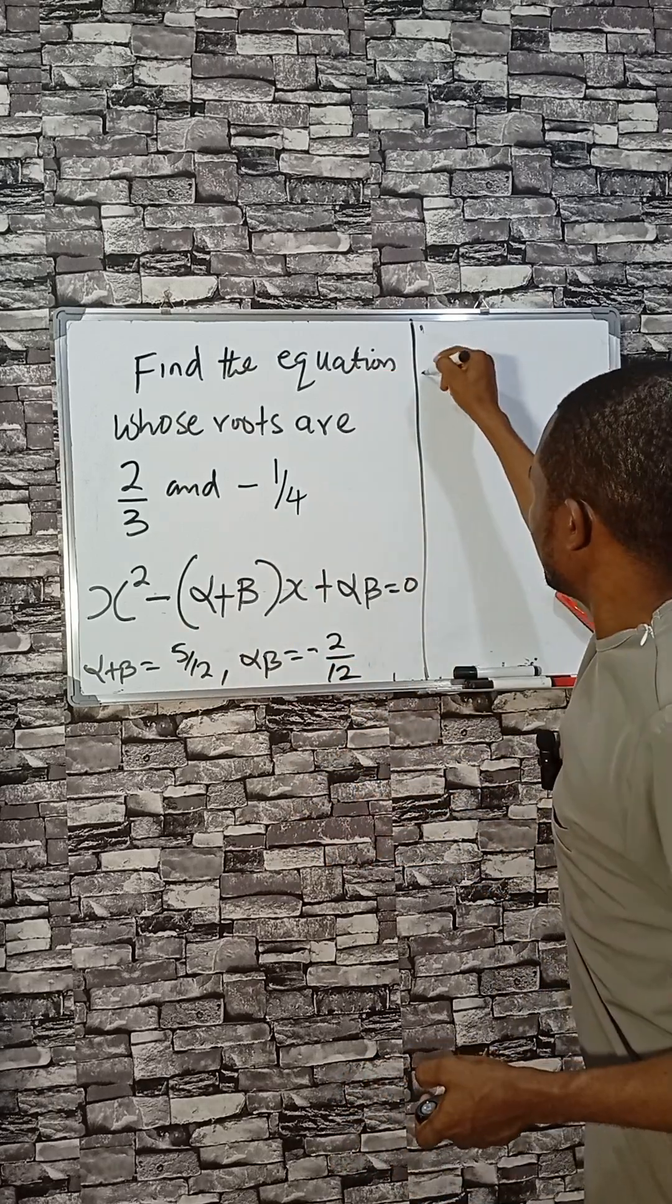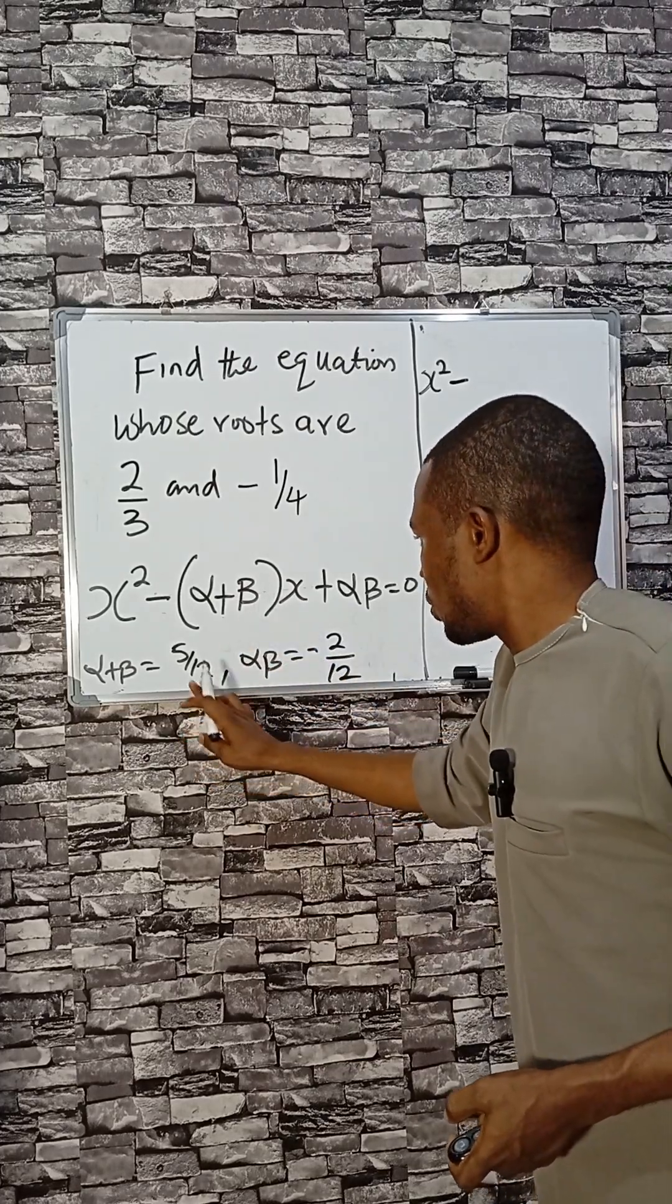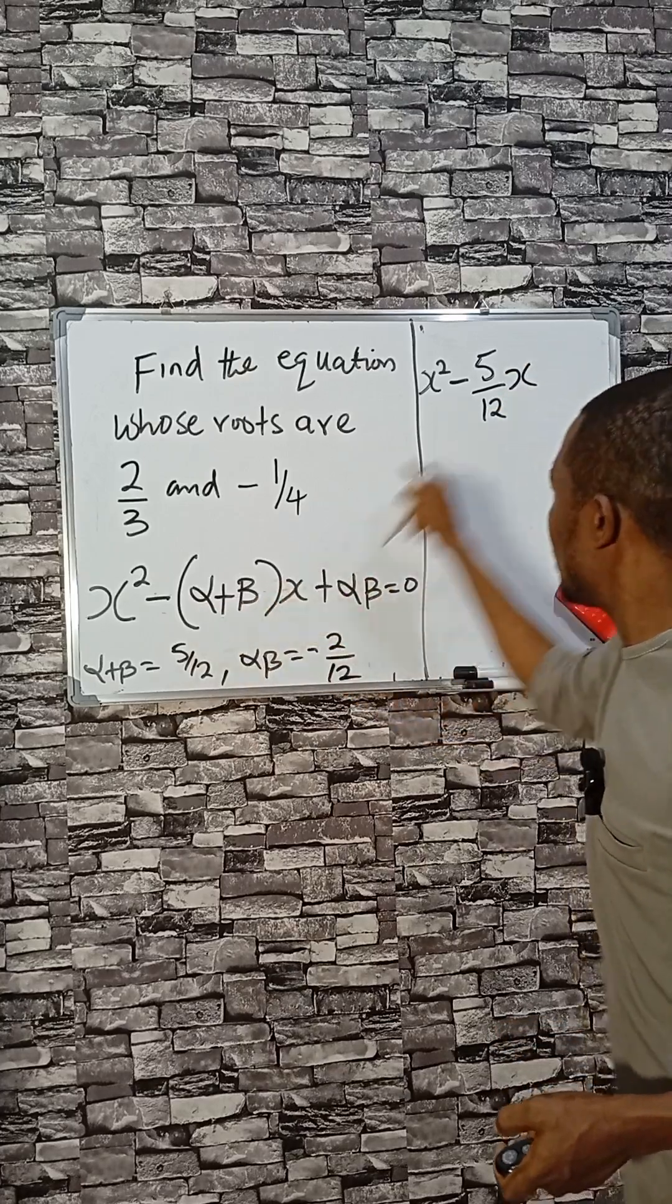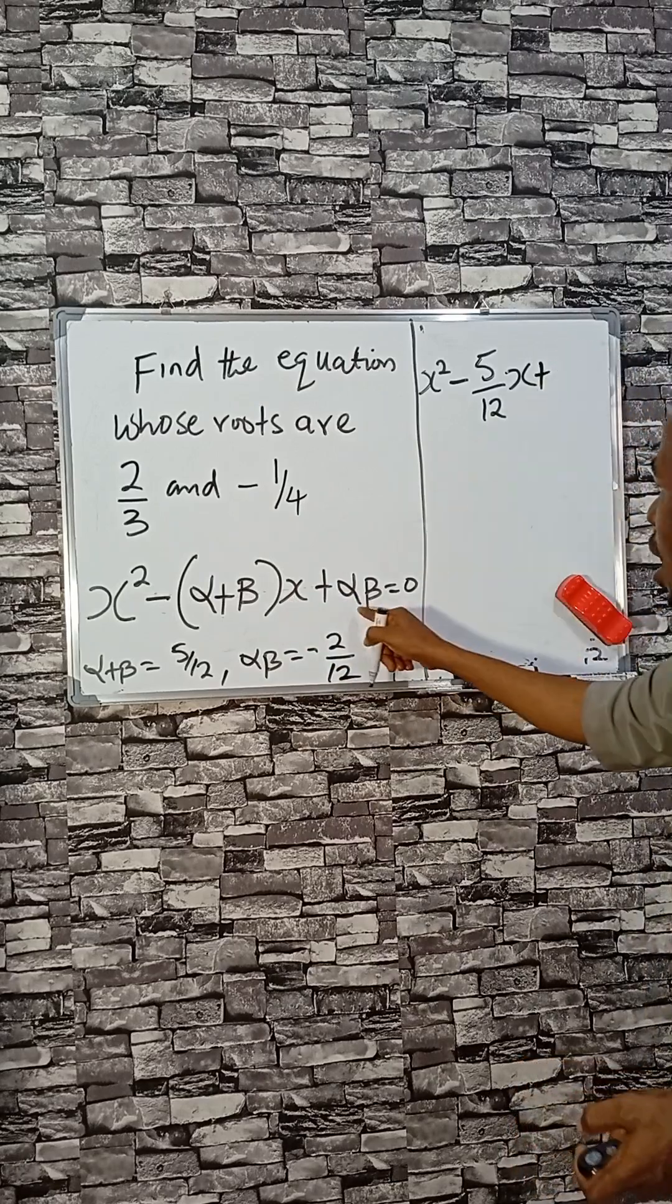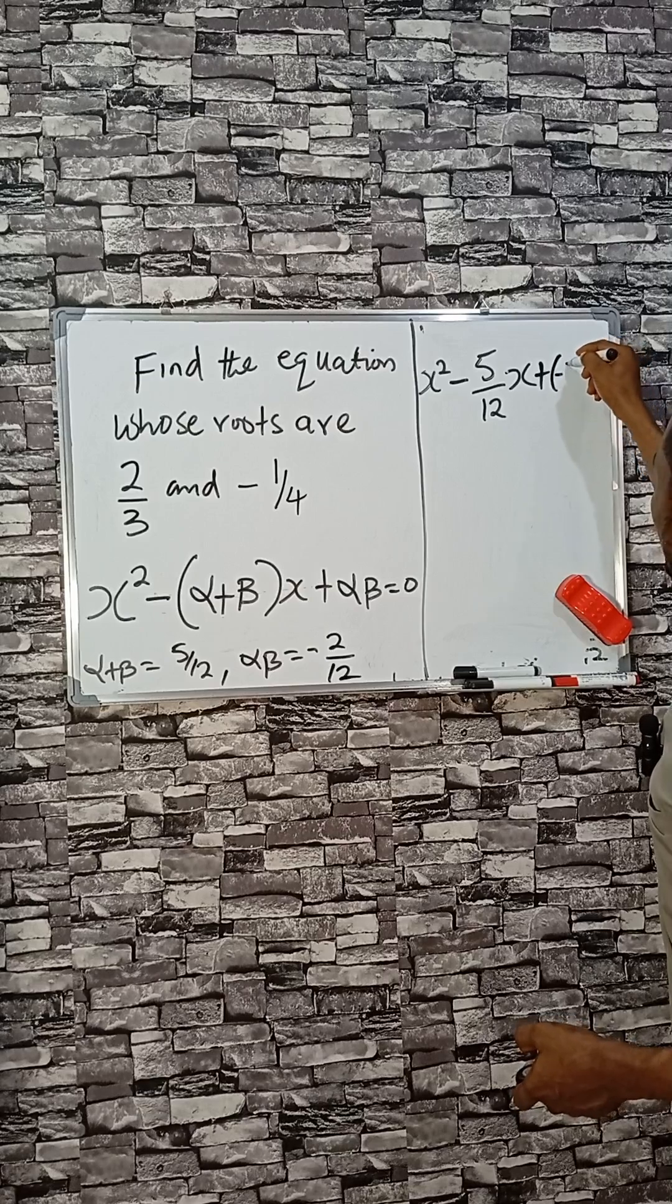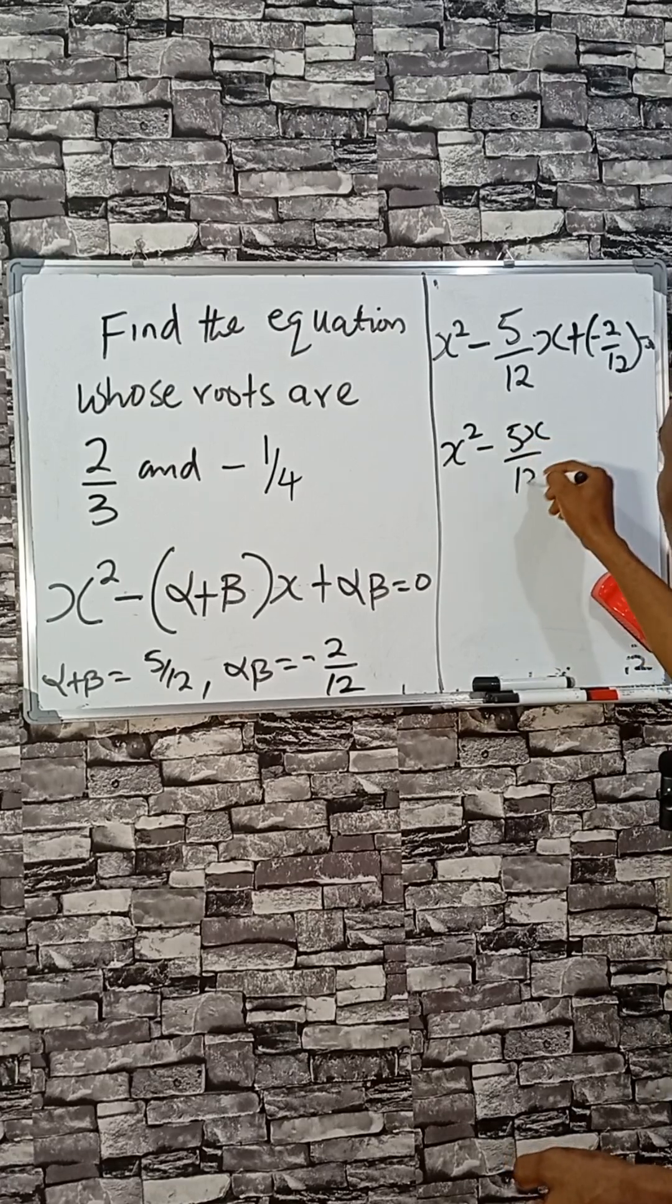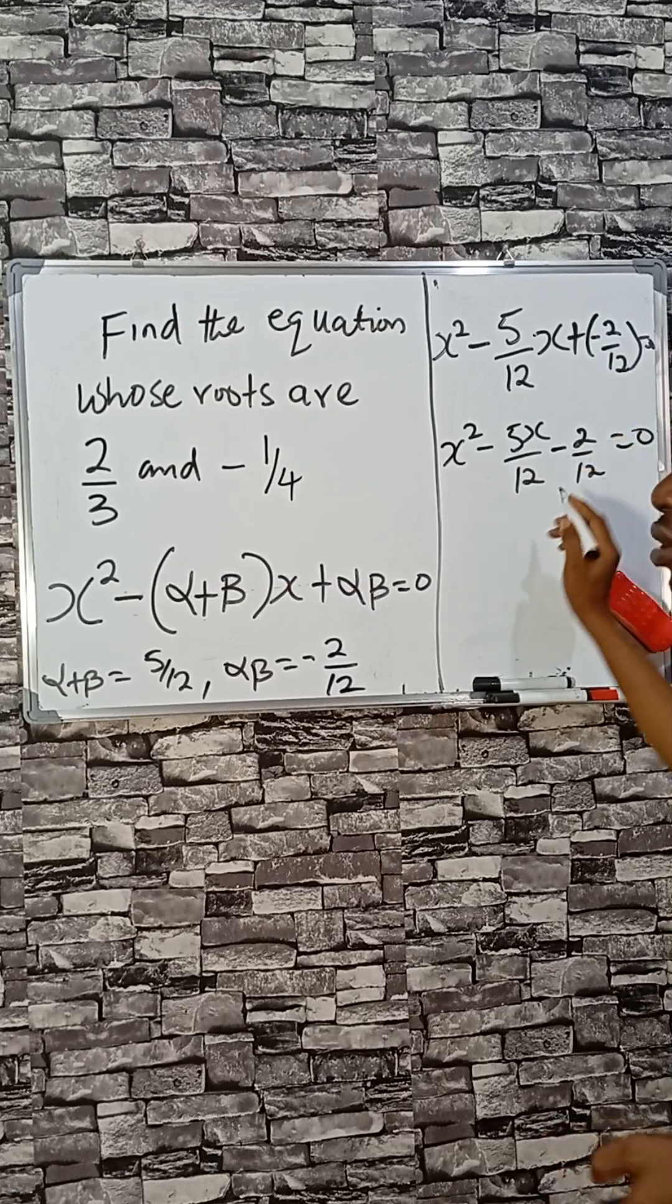Now substitute into the formula: x² minus sum of roots (α + β), which is 5/12, times x, plus the product αβ, which is -2/12, equals zero. So x² minus 5x/12 minus 2/12 equals zero.